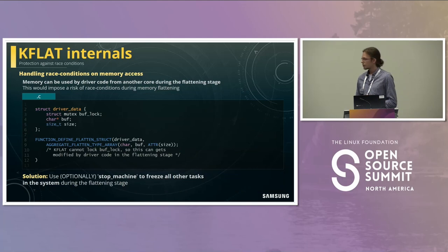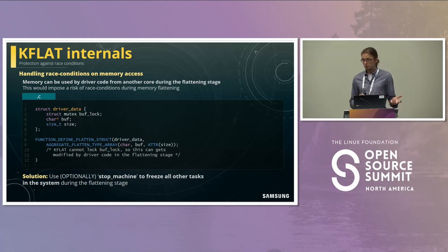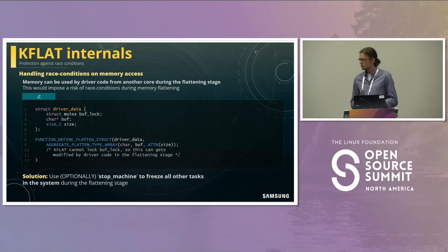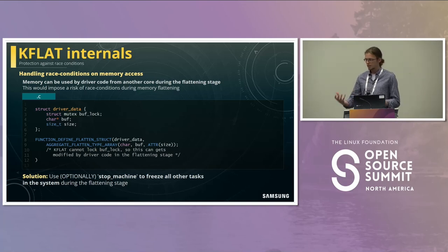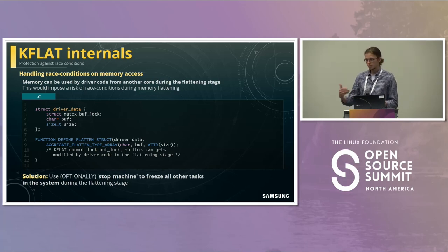KFLAT also has to handle data races. Many kernel structures are used concurrently and synchronized with primitives like mutexes, semaphore spin locks. KFLAT obviously cannot lock all of them since that would cause a global system deadlock. So if needed, we use stop_machine to basically freeze all other tasks in the system, creating a memory snapshot from a particular moment in the kernel. If a user needs to access a heavily used structure and wants to ensure the memory is complete, they can also specify mutexes to be locked.